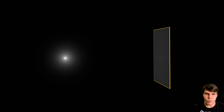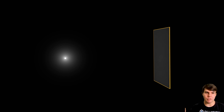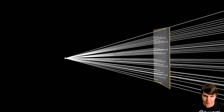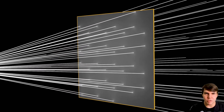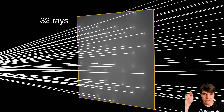Let me just visualize what's happening here. We've got a single point of light and we have a plane. This single point of light is going to be casting rays in all directions — bajillions of rays — and some of those rays are going to be hitting the plane. In this case, we can count them: 32 rays hitting this plane.